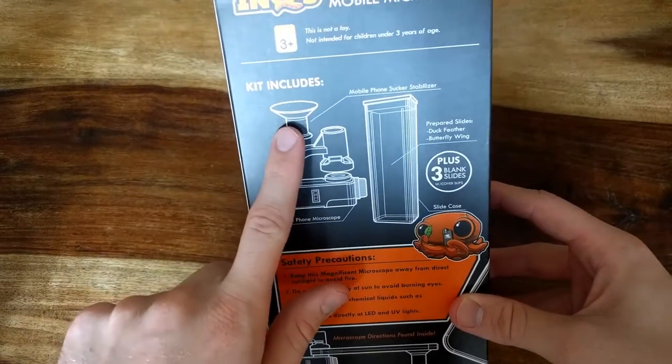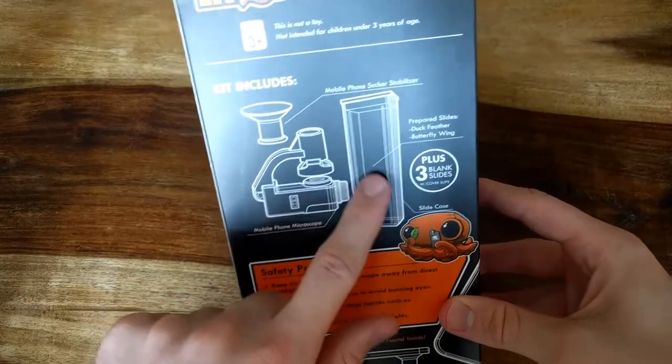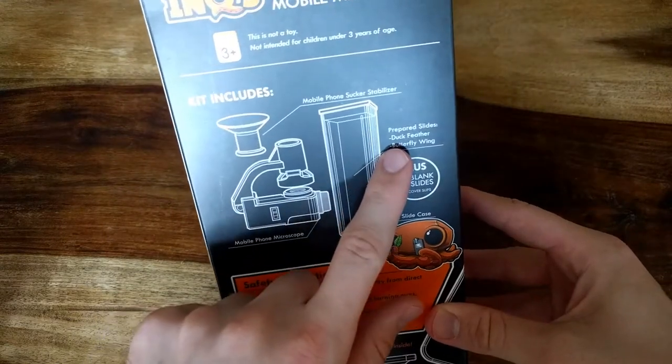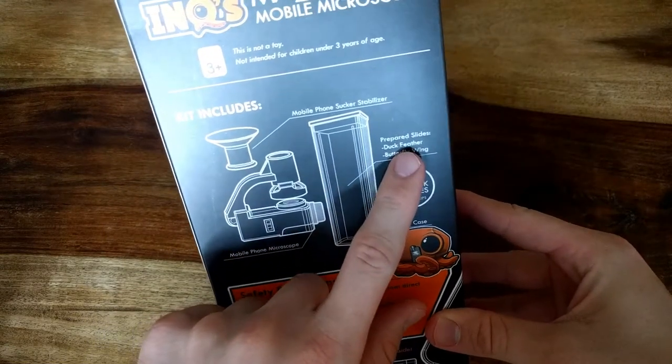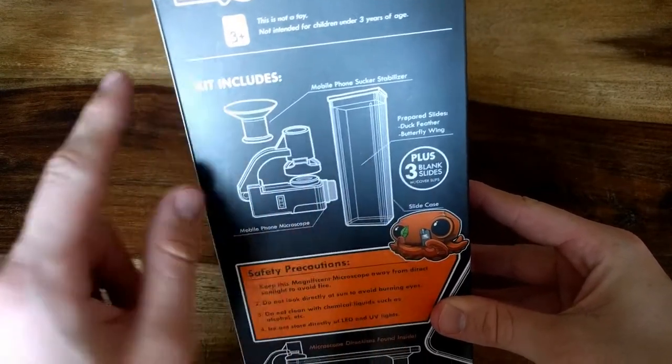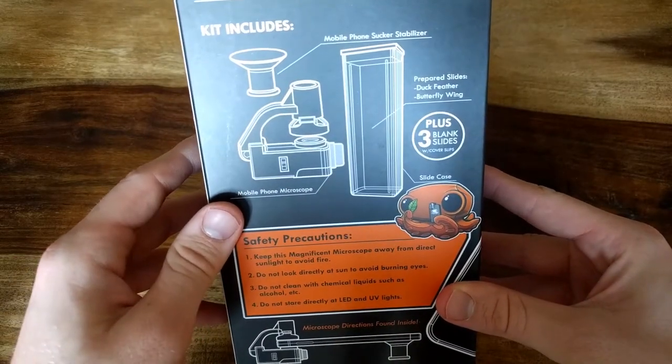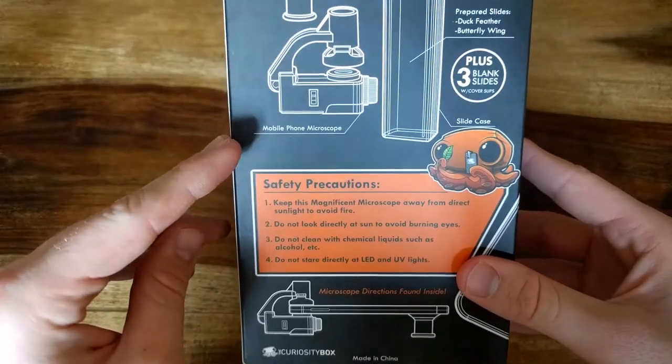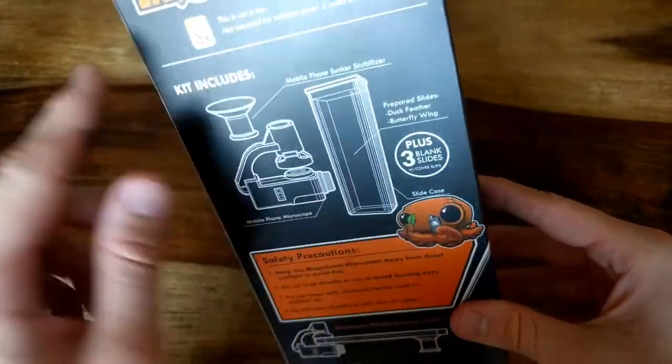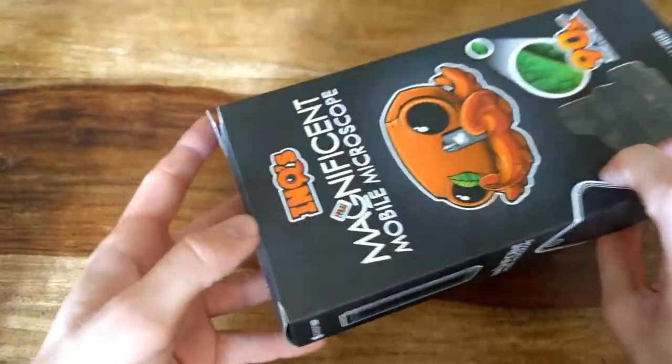These are some samples. It actually has two samples: duck feather and butterfly wing for you to check, and some other blank slides for you to look at. So I already opened it, as you can see.